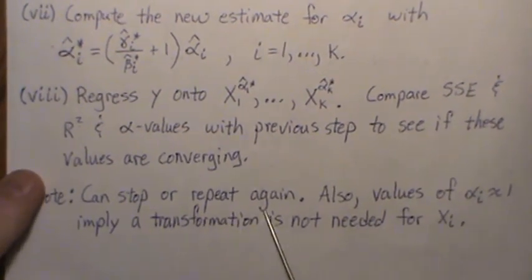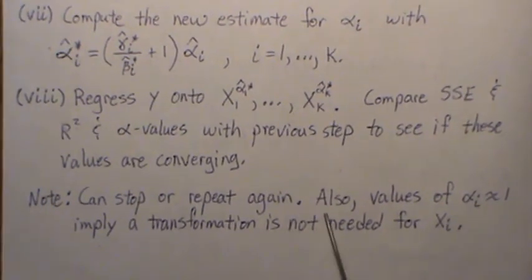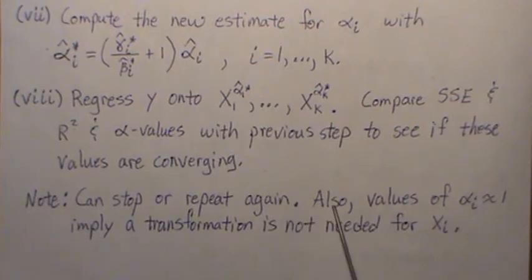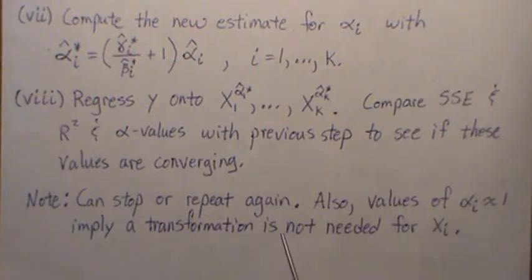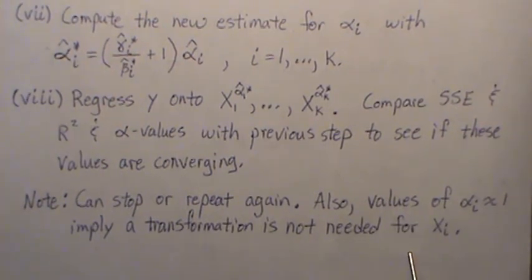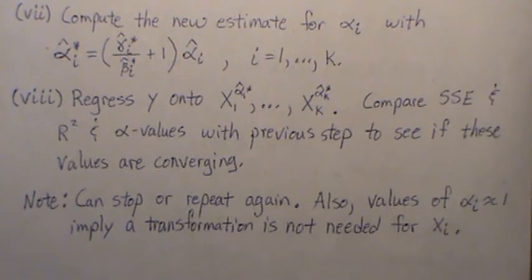So you can stop or you can repeat it again. And that's it. Also, note that if alpha values are really close to one, that implies a transformation is not needed for the X_i.